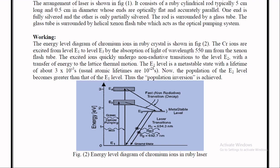The E2 level is a metastable state with a lifetime of about 3 into 10 power minus 3 seconds, in the order of milliseconds, whereas usual atomic lifetimes are 10 power minus 8 seconds. Now the population of E2 level becomes greater than that of E1 level because of continuous pumping. At this stage, population inversion is achieved.